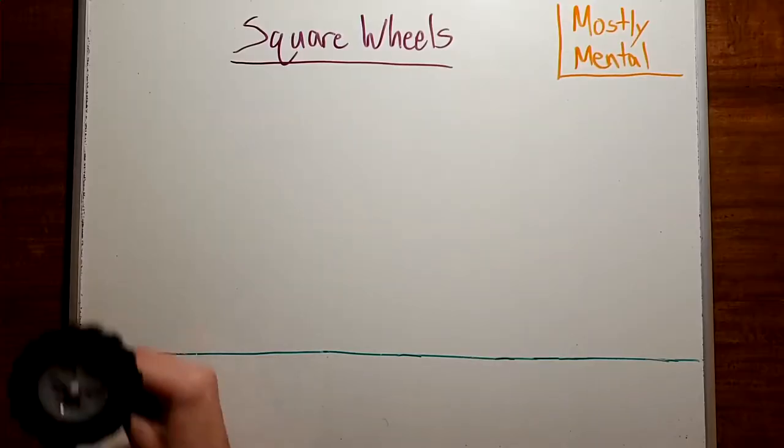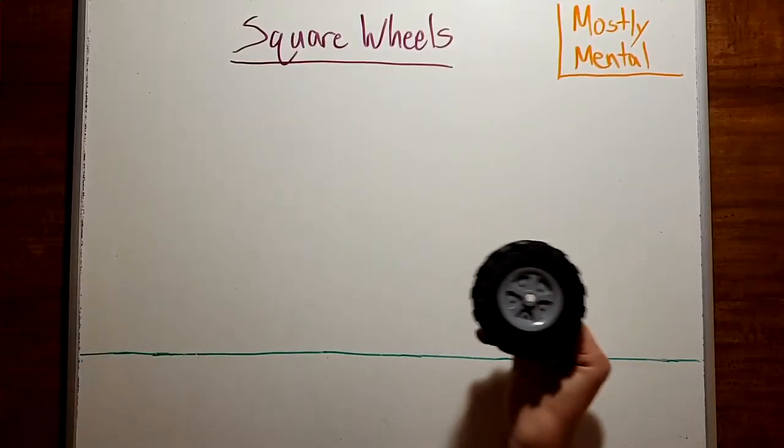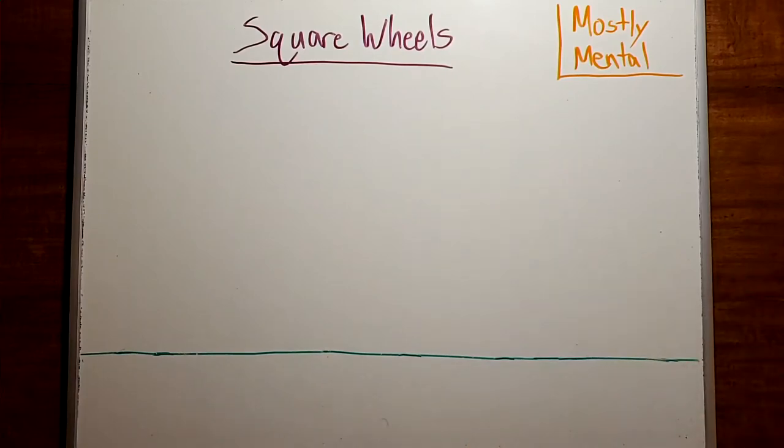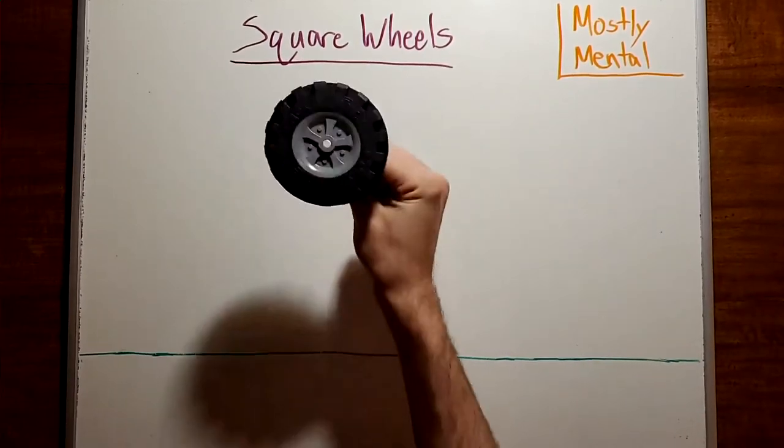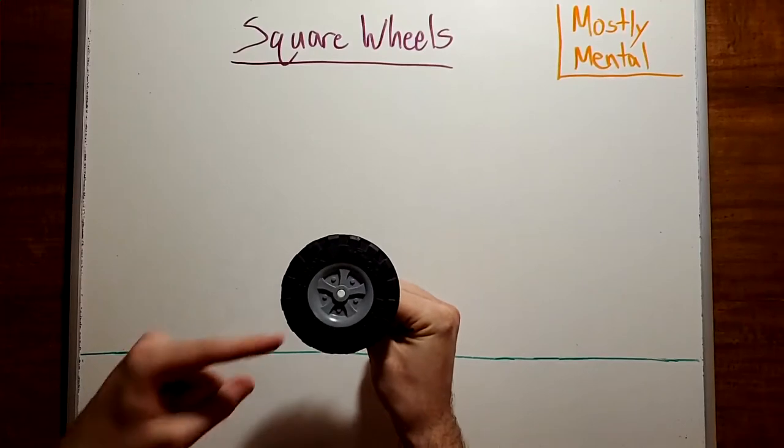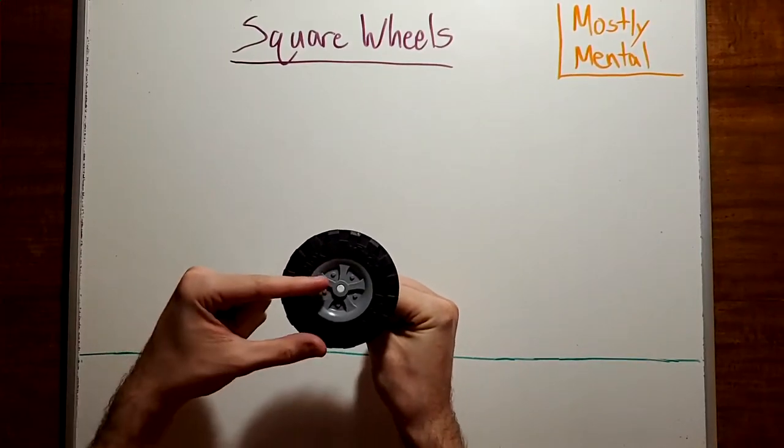What does it even mean to say that a round wheel rolls smoothly on a flat surface? Well, we don't want the axle bouncing up and down, so the center needs to be at a constant height.